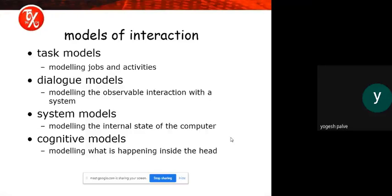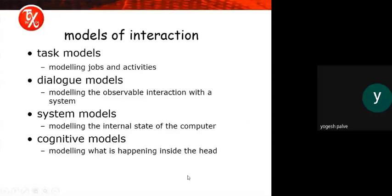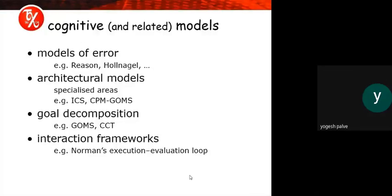In the system model, we are modeling the internal states of the computer. So it comes under the system model when there is an internal state of the computer going on. Then in the cognitive model, we are modeling what is happening inside the head — whatever activity is done comes under the cognitive models.